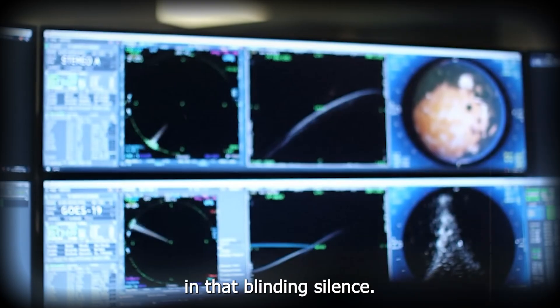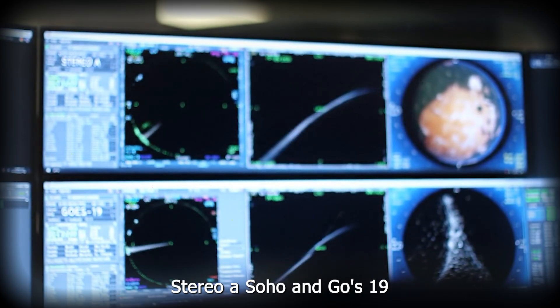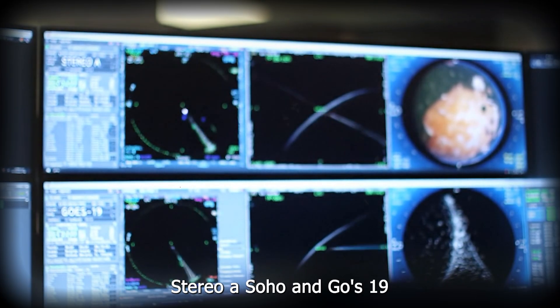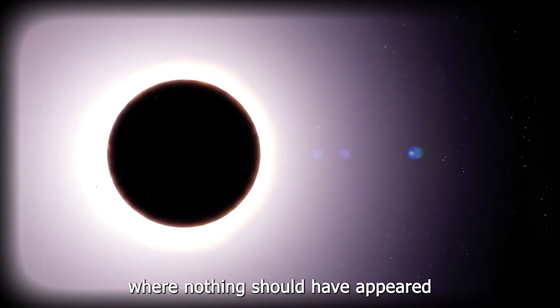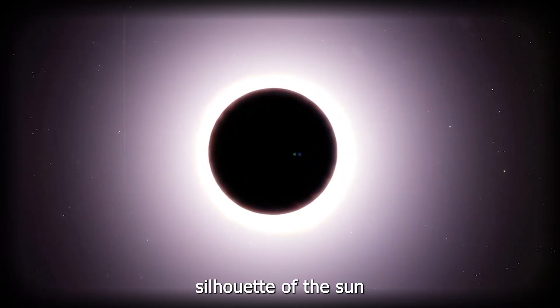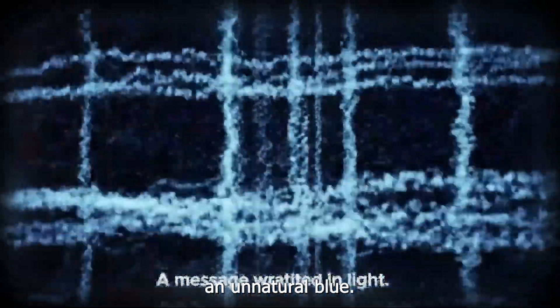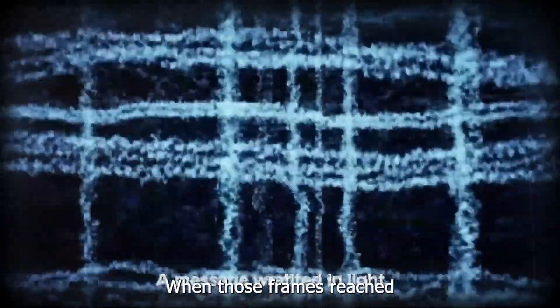But something happened in that blinding silence. Instruments designed for solar weather, Stereo A, Soho, and GOES-19, captured flickers where nothing should have appeared. In their frames, the black silhouette of the Sun was momentarily rimmed by an impossible glow, a pulse of light that shifted toward an unnatural blue.